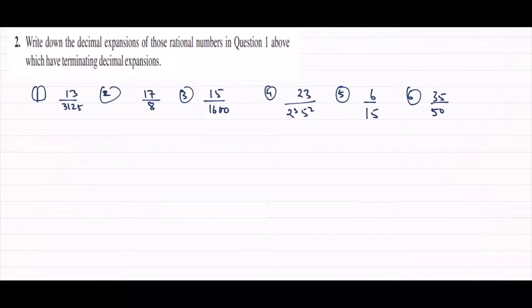There are two ways to do this. We can use the factorization method — taking powers of 2 and 5 to form powers of 10 — or the long division method. We will use the second way, not only the long division method. It will be easier to solve and we will solve our questions very quickly.